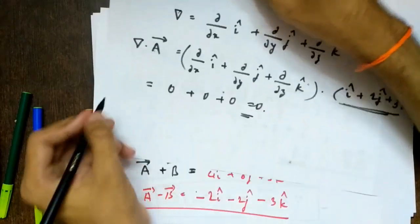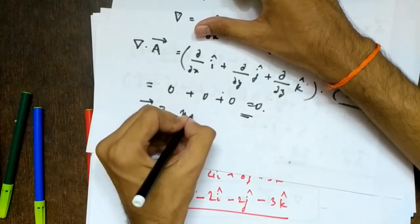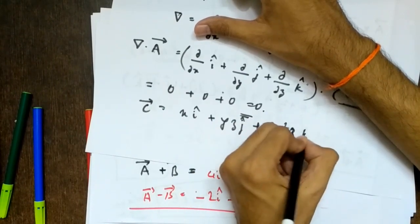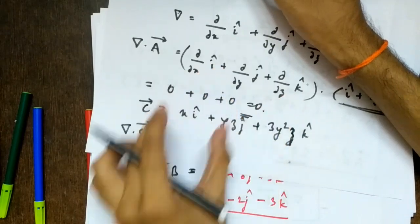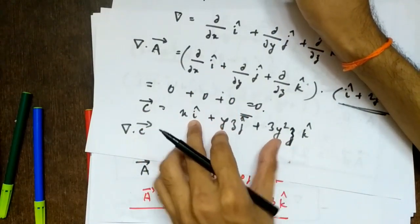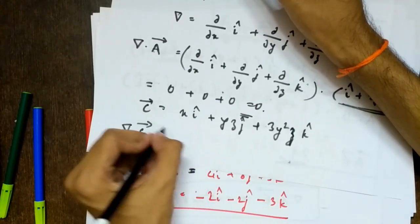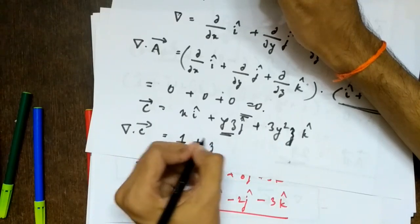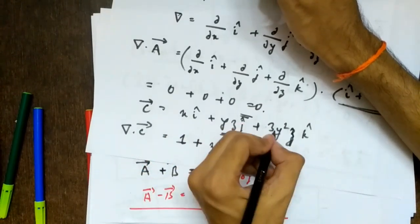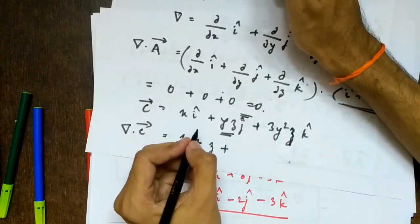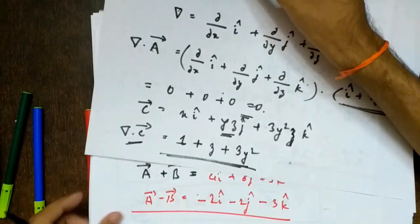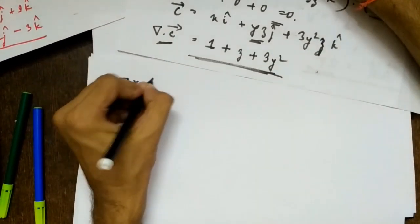Let's take another vector C equals x i-cap plus yz j-cap plus three y-squared z k-cap, and find del dot C. Writing it out: partial by partial x of x gives one; partial by partial y of yz — z is constant with respect to y so we get z; partial by partial z of three y-squared z — three y-squared is constant so we get three y-squared. Therefore del dot C equals one plus z plus three y-squared. Again, this is a dot product so we get a scalar, not a vector.